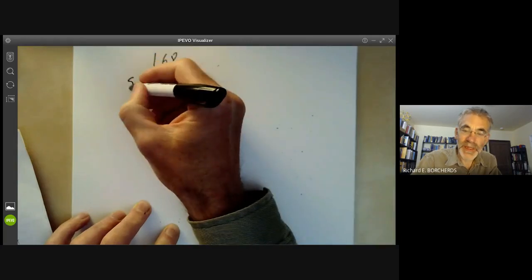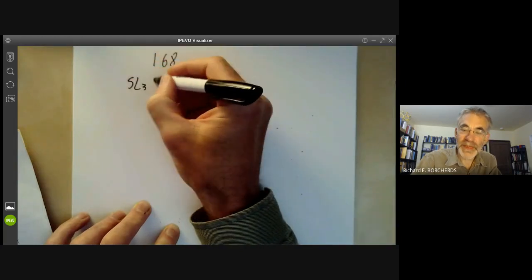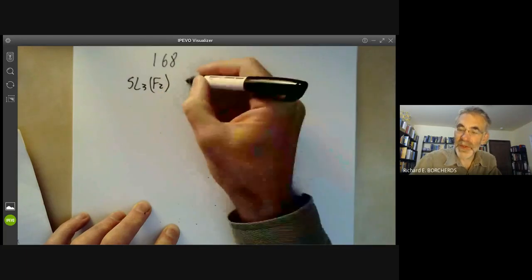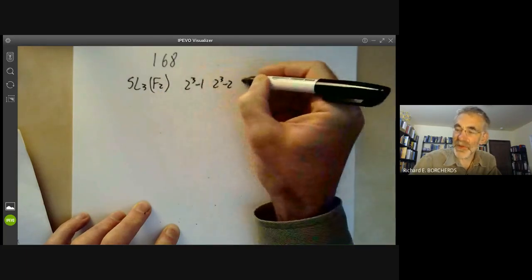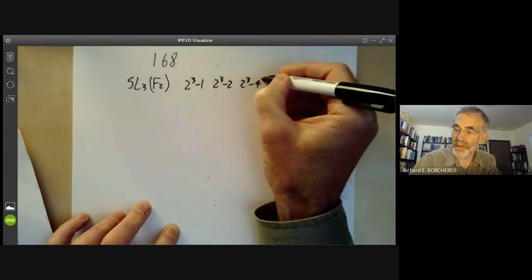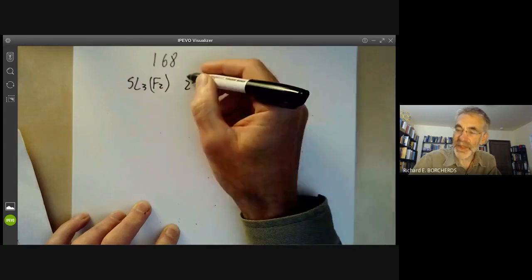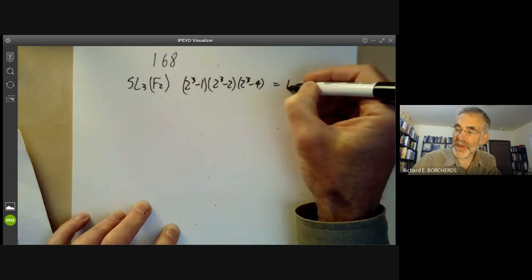We can take the group SL3 over a field with two elements. And this is order 2 cubed minus 1 times 2 cubed minus 2 times 2 cubed minus 4, which is 7 times 6 times 4, which is 168.